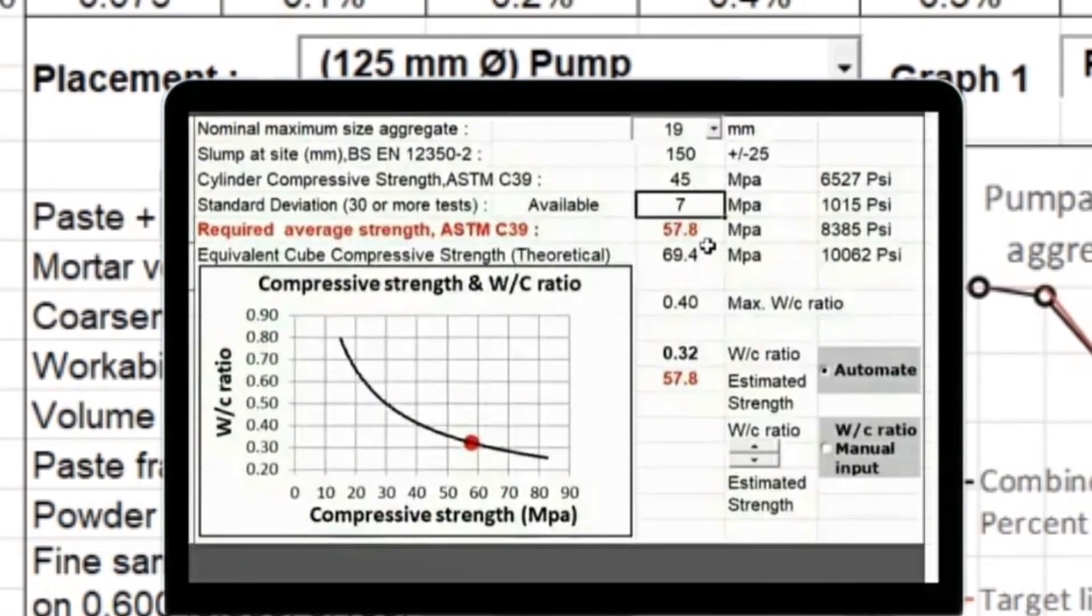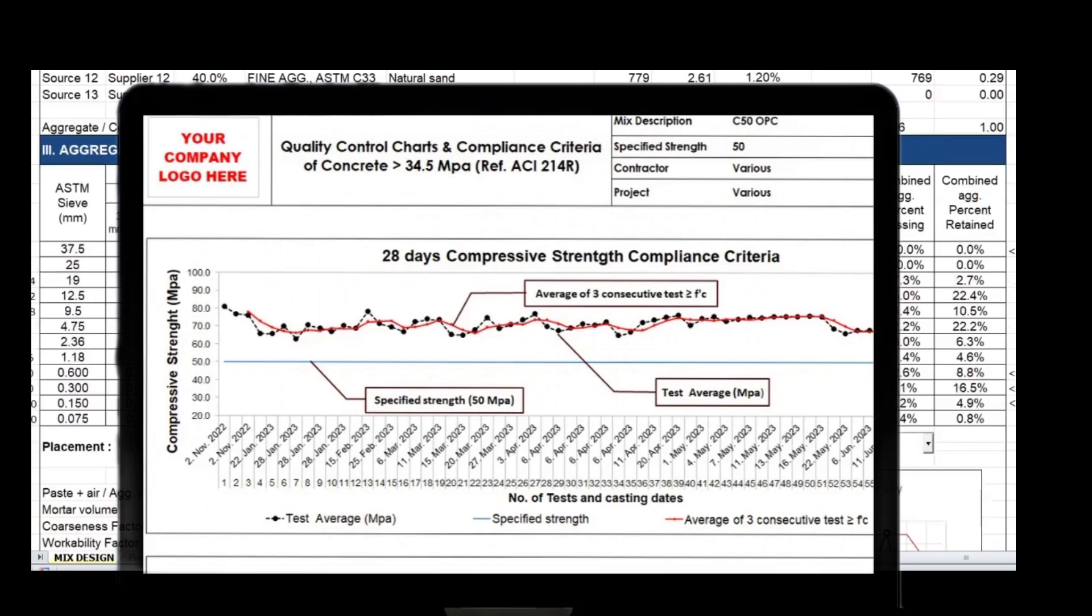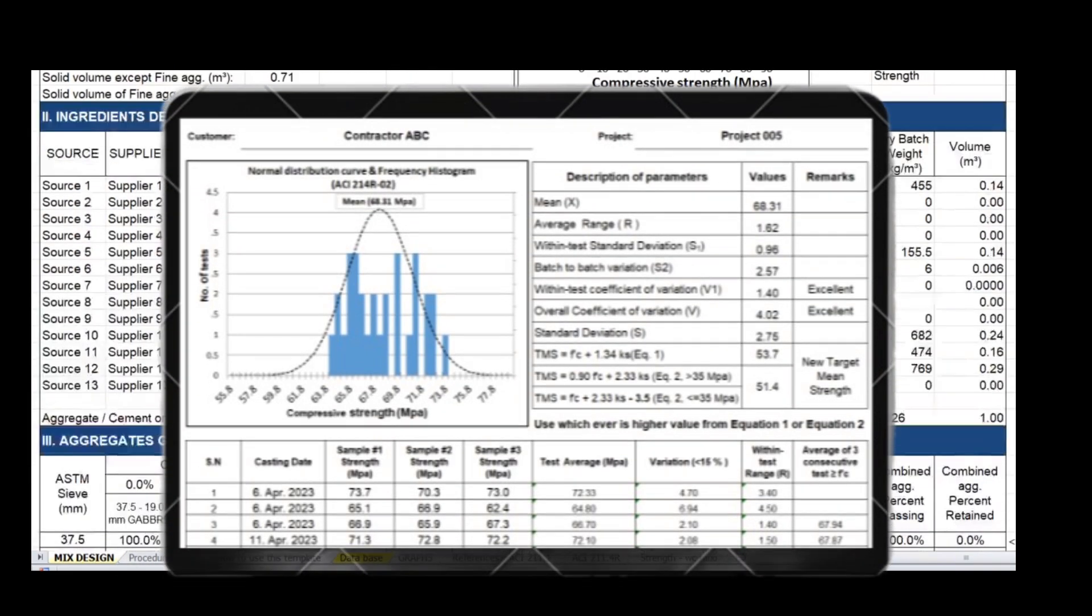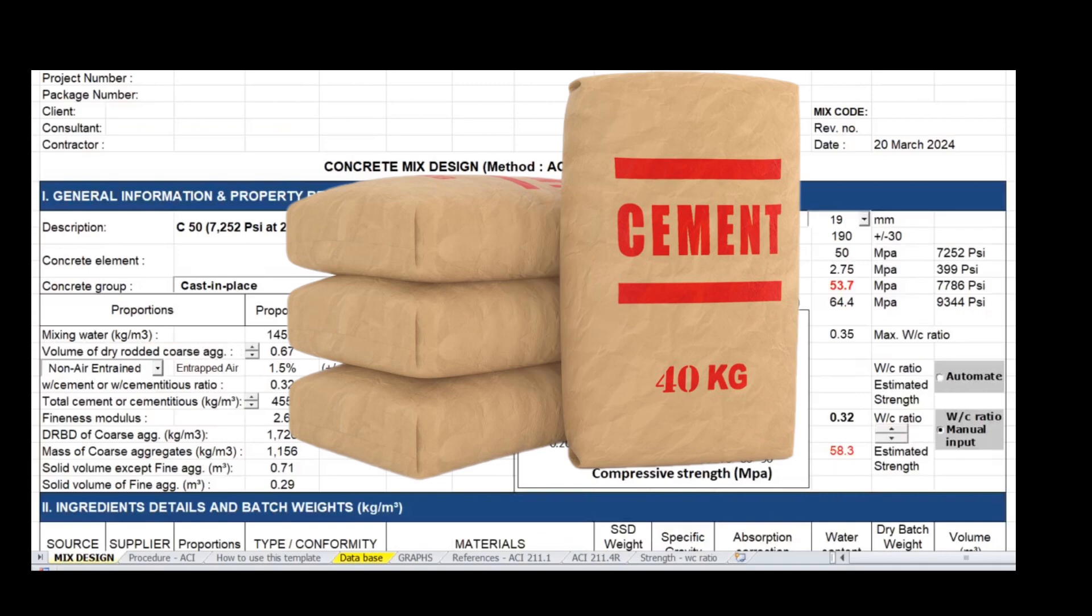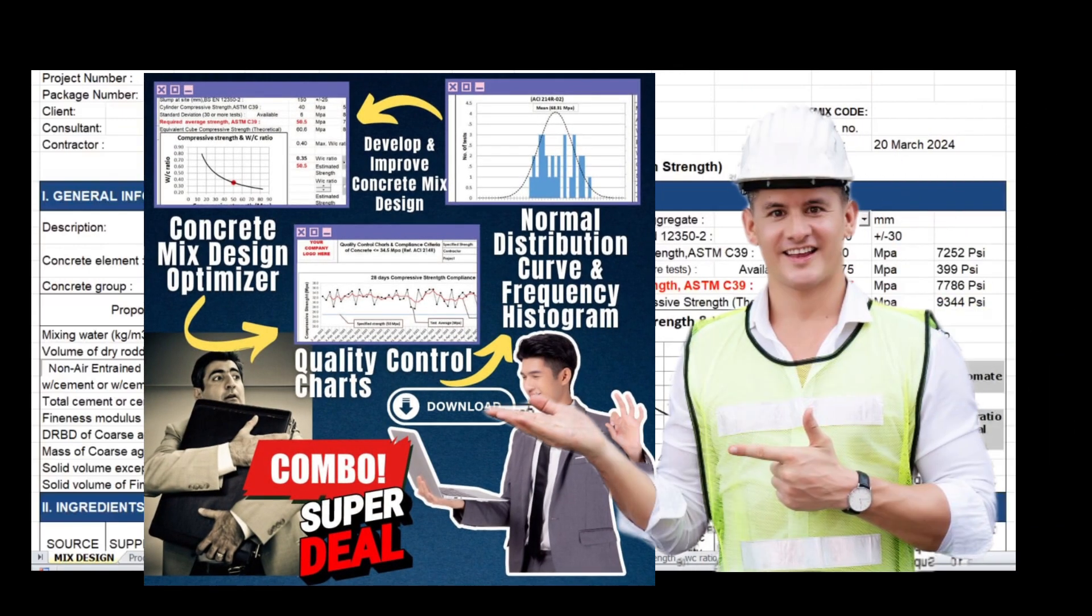So now you can try this new optimized mix design and repeat the process. Monitor the quality control chart. Use latest standard deviation until it's possible to use the lowest cement content with the help of this amazing package. Click the link and try now.